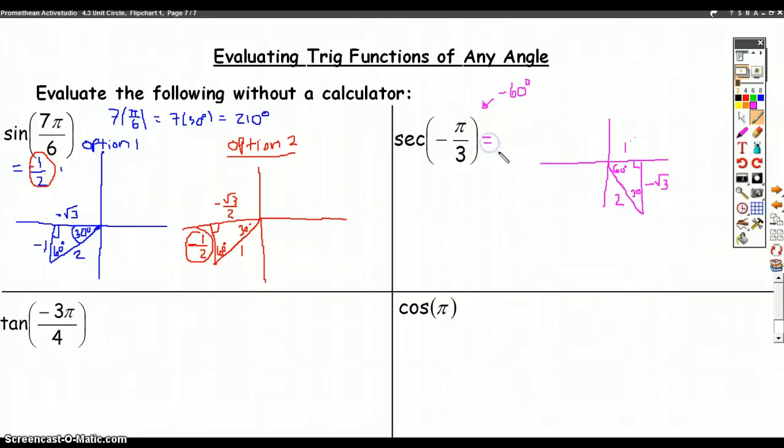Well, secant is the reciprocal of cosine. So I use my reference angle. Cosine is adjacent over hypotenuse, 1 over 2. So secant is 2 over 1, which you can also just write as 2.